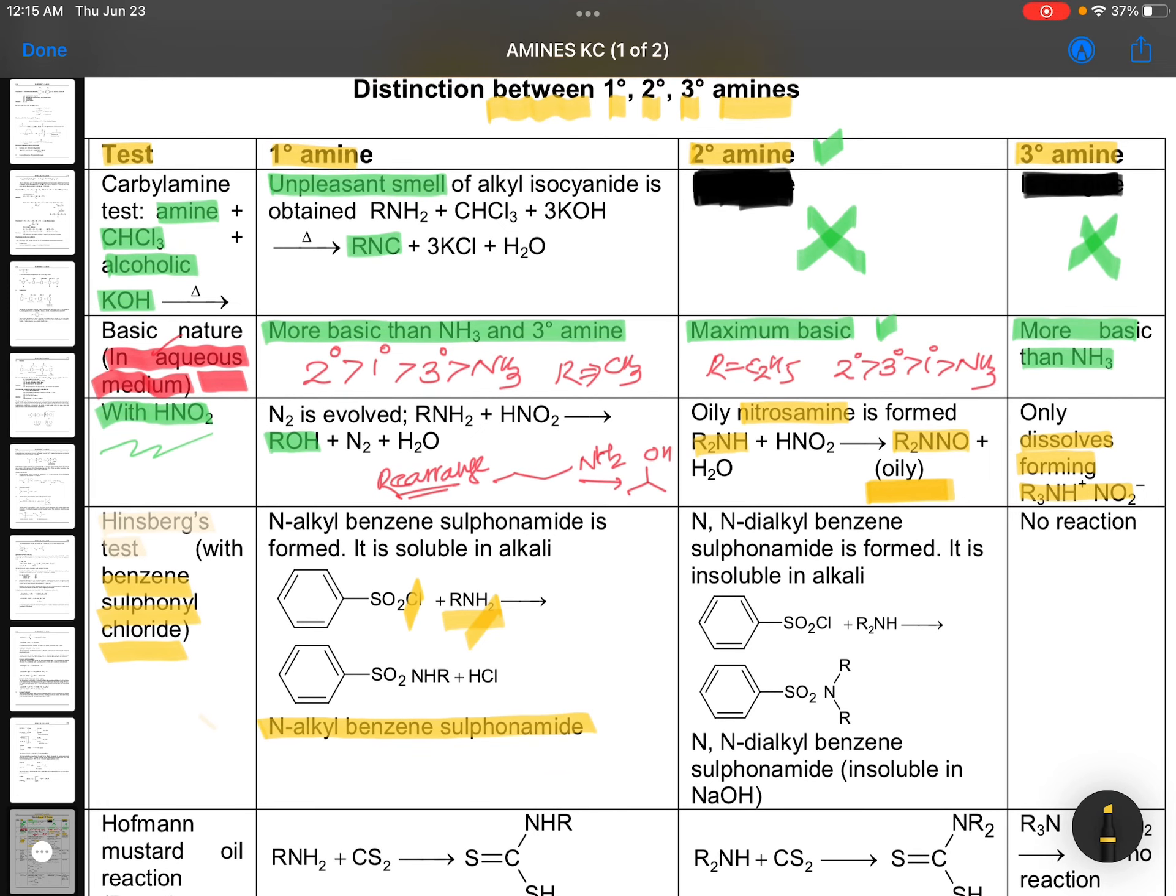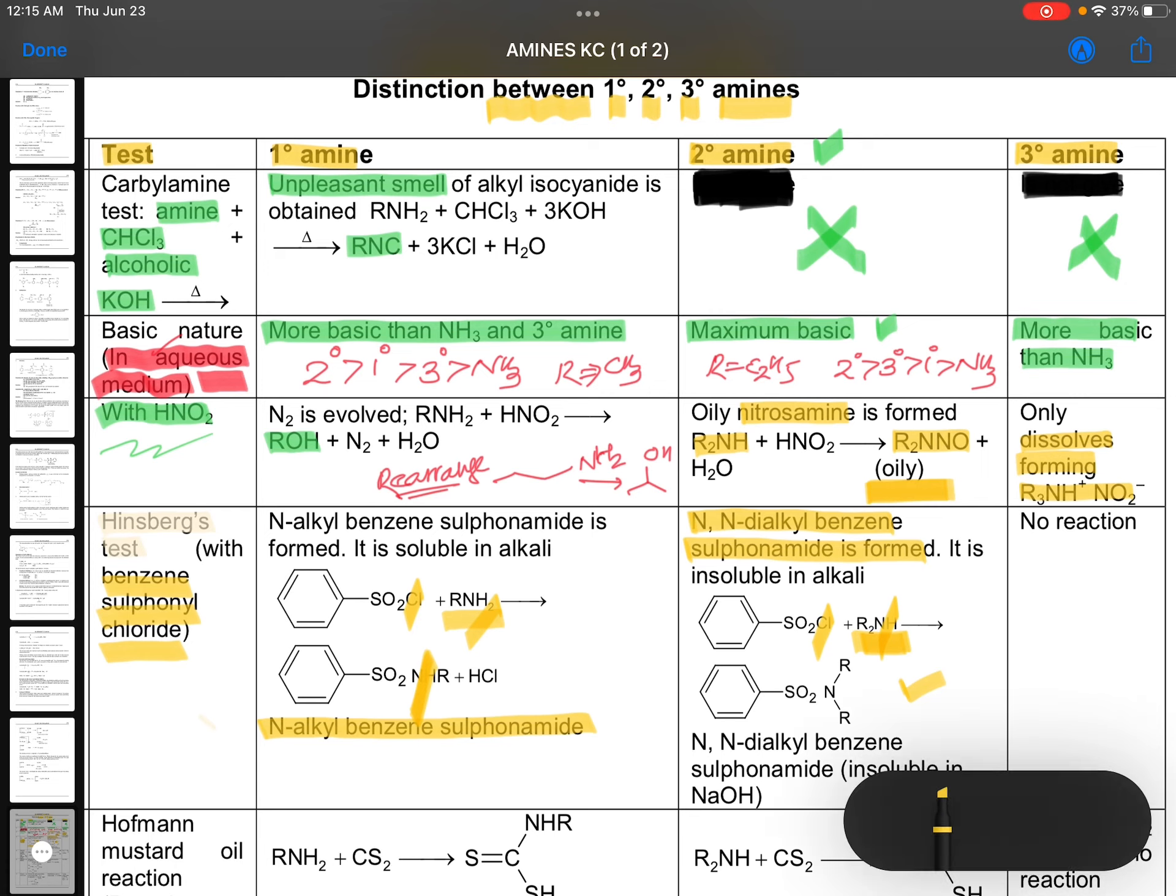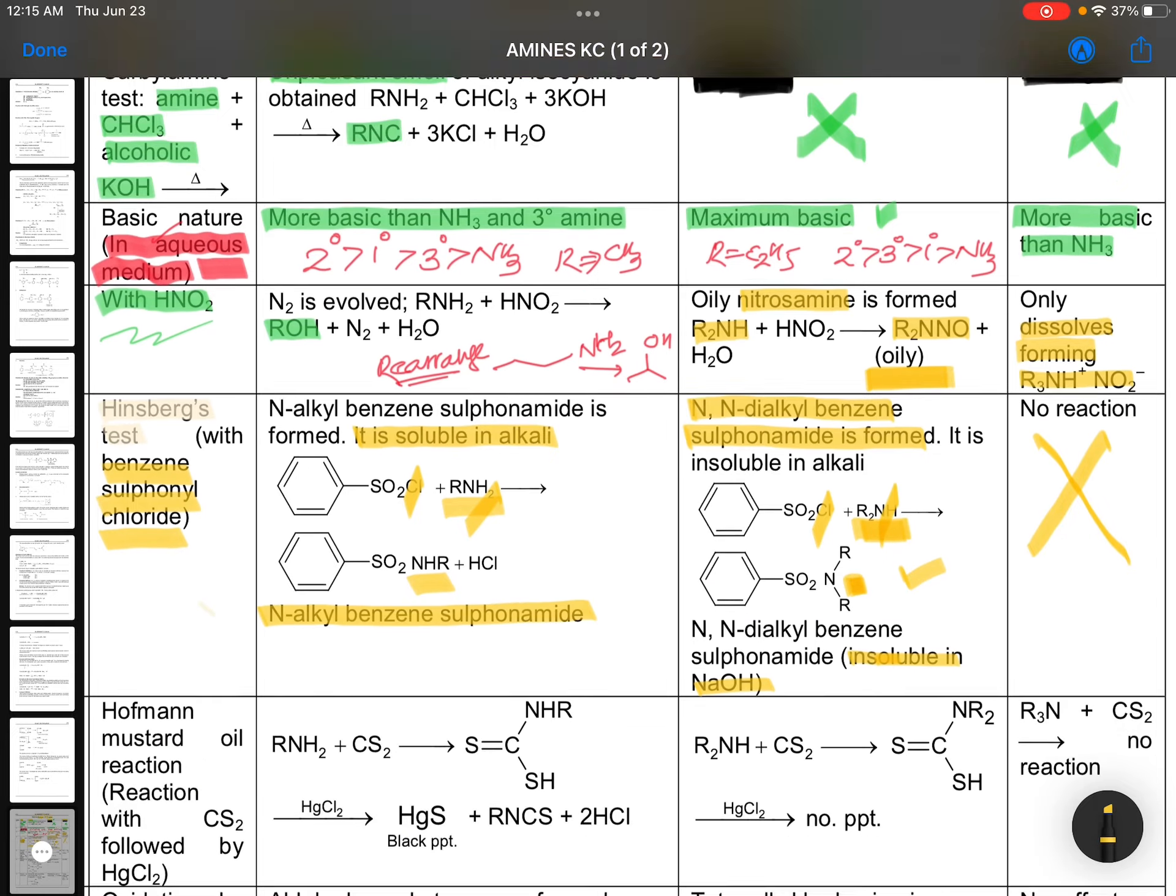Then, N,N-dialkyl benzene sulfonamide, you can expect in case of secondary amines. See here. Secondary amines, R2NH. This hydrogen, this chlorine is out. You can get there N,N-dialkyl benzene sulfonamide. This is, again, insoluble in sodium hydroxide. This is soluble in sodium hydroxide because of this hydrogen. There is a hydrogen. Because of this hydrogen, it is soluble. Such kind of hydrogens are not there. So it is insoluble in sodium hydroxide. Here it is soluble in alkali. Here it is insoluble in sodium hydroxide. Very, very special. And yet, there is no reaction. No reaction itself.